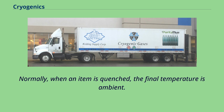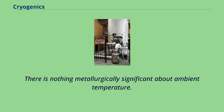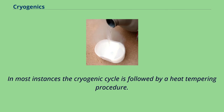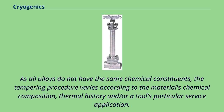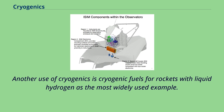Cryogenic processing is not a substitute for heat treatment but rather an extension of the heating, quenching, and tempering cycle. Normally when an item is quenched, the final temperature is ambient — the only reason for this is that most heat treaters do not have cooling equipment. The cryogenic process continues this action from ambient temperature down to minus 320 degrees Fahrenheit. In most instances, the cryogenic cycle is followed by a heat tempering procedure, and the entire process takes three to four days.